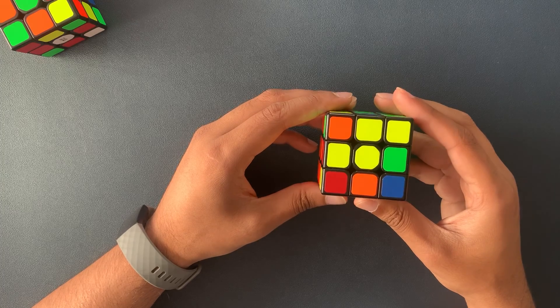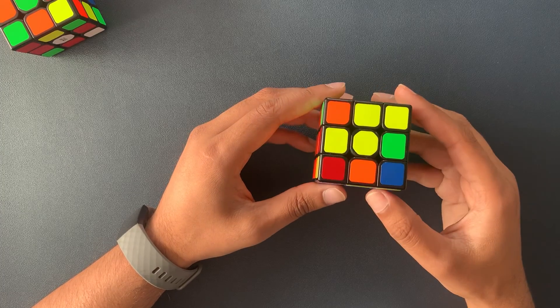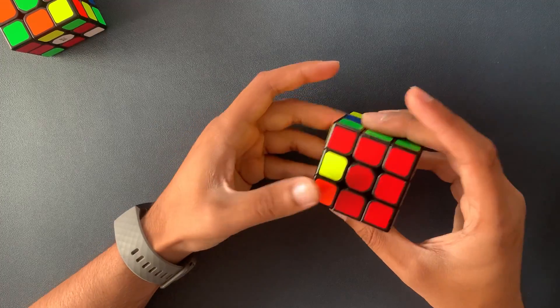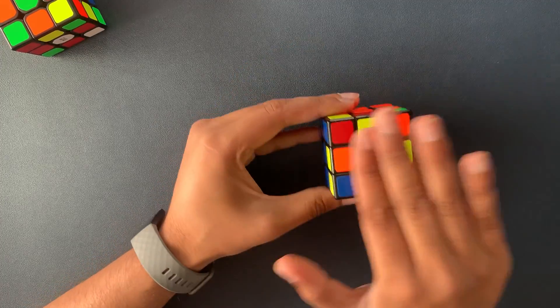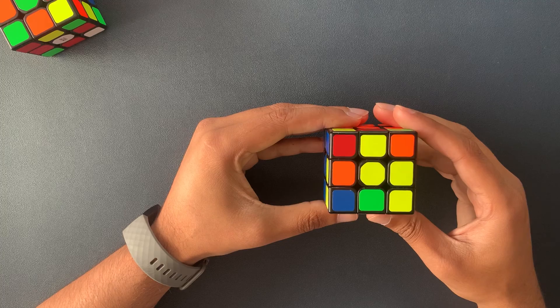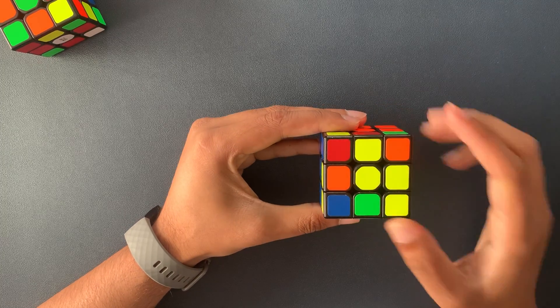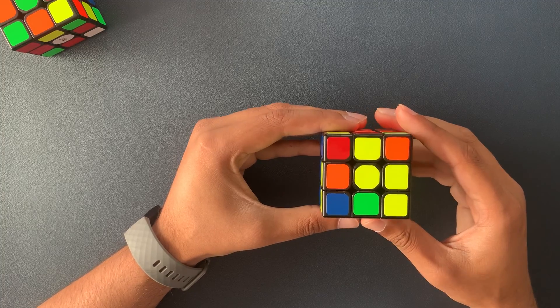When we're solving step 5 we need to be in a position where the first two layers are complete and we're working on the top layer. By the end of step 5 we should see a yellow cross. So to show you how to get to there this is what we do.